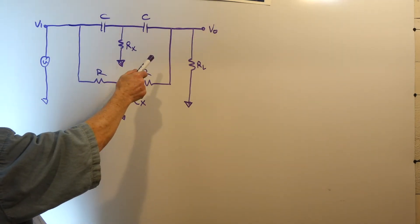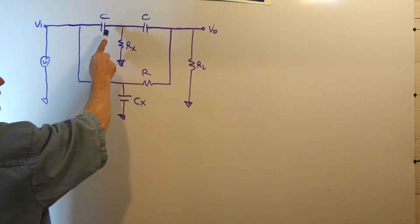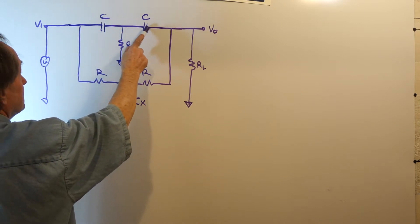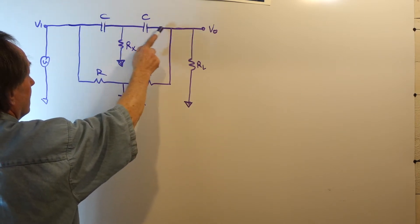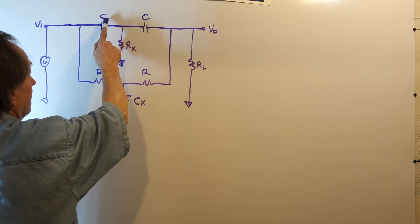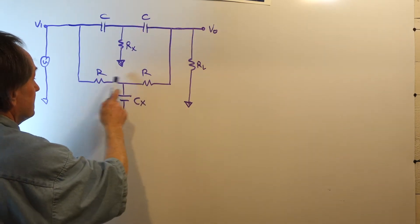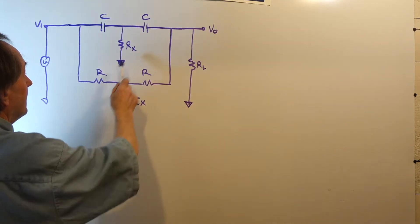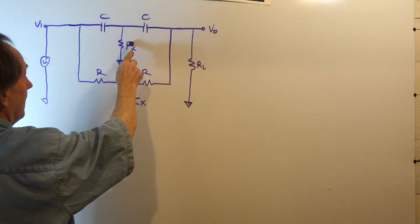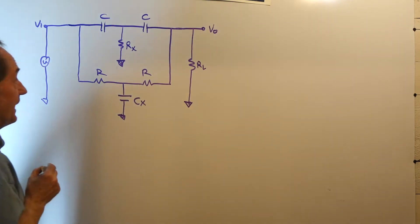The problem is: given that we have two capacitors in this leg of equal value C and two resistors in this leg of equal value R and two unknown RX and CX capacitors.